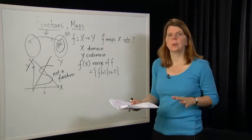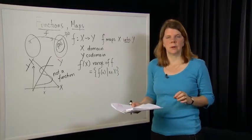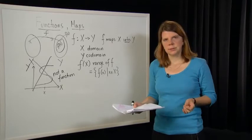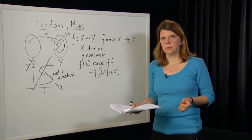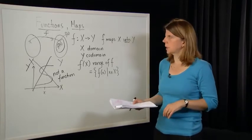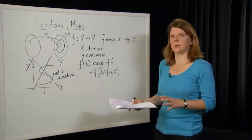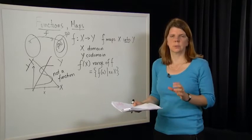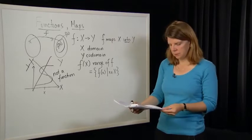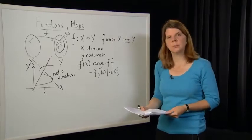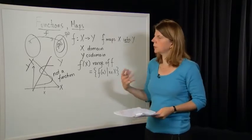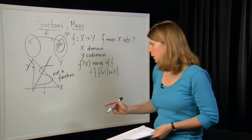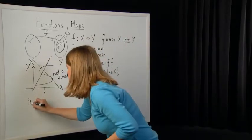Let's talk about three properties of functions. The first is injective, the next is surjective, and the third is both properties together, which is called bijective. What are these properties? Let's start with injectivity.